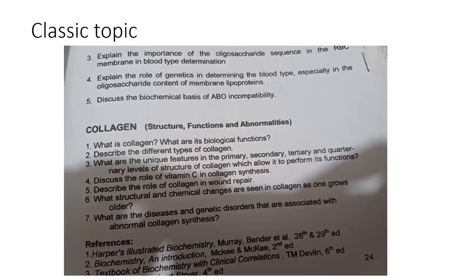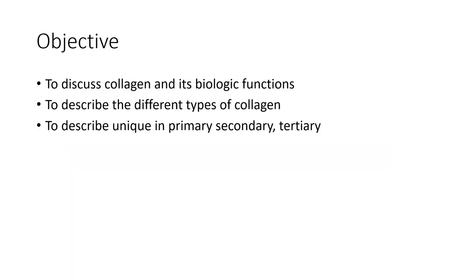Let's begin. The classic type — 'classic' because it stays within a single subject, more focused on biochemistry in this example. Say the topic is collagen. I converted the learning objective to: discuss collagen and its biological functions; describe the different types of collagen; and describe what is unique in the primary, secondary, tertiary, and quaternary structure of collagen.